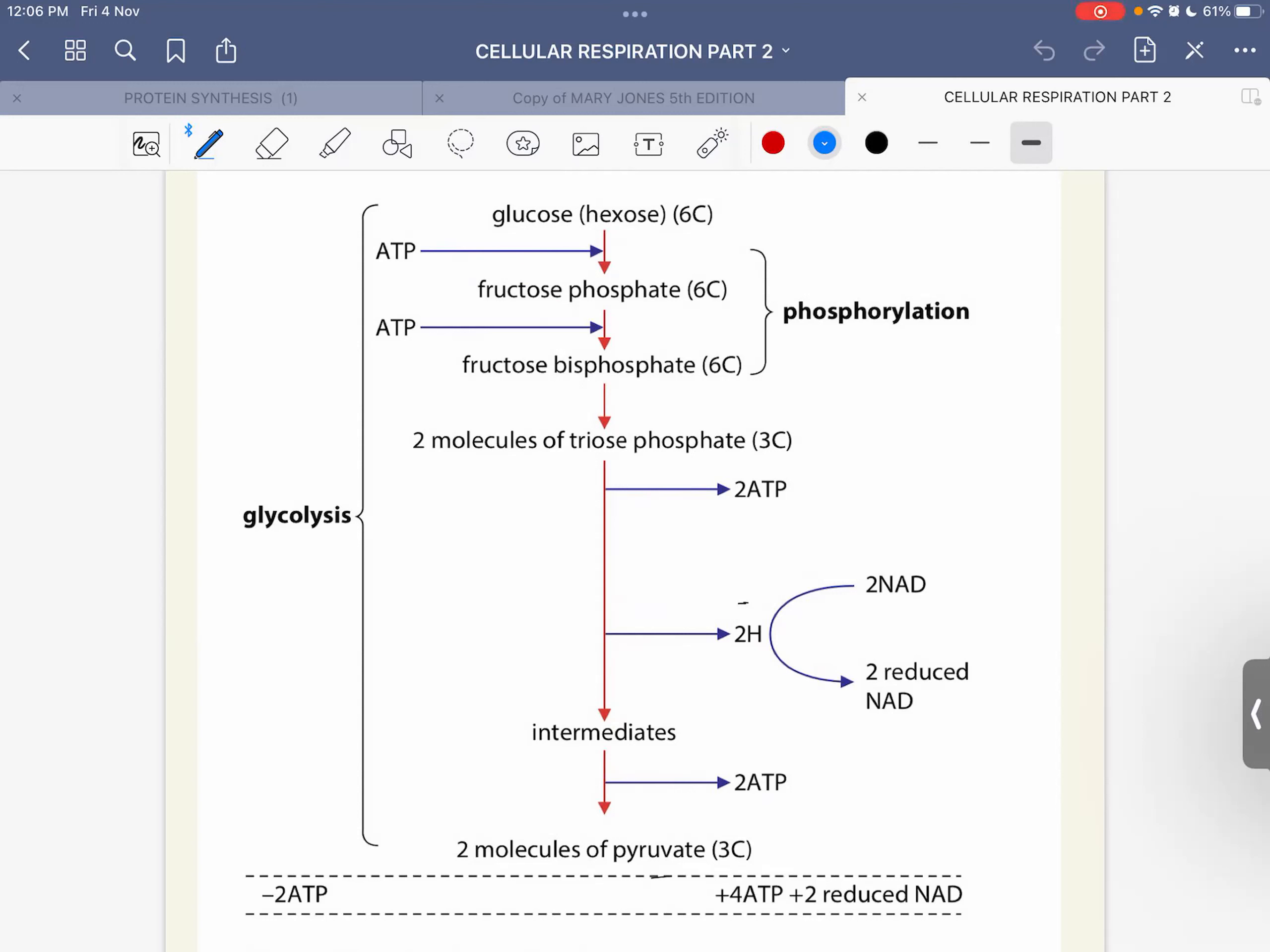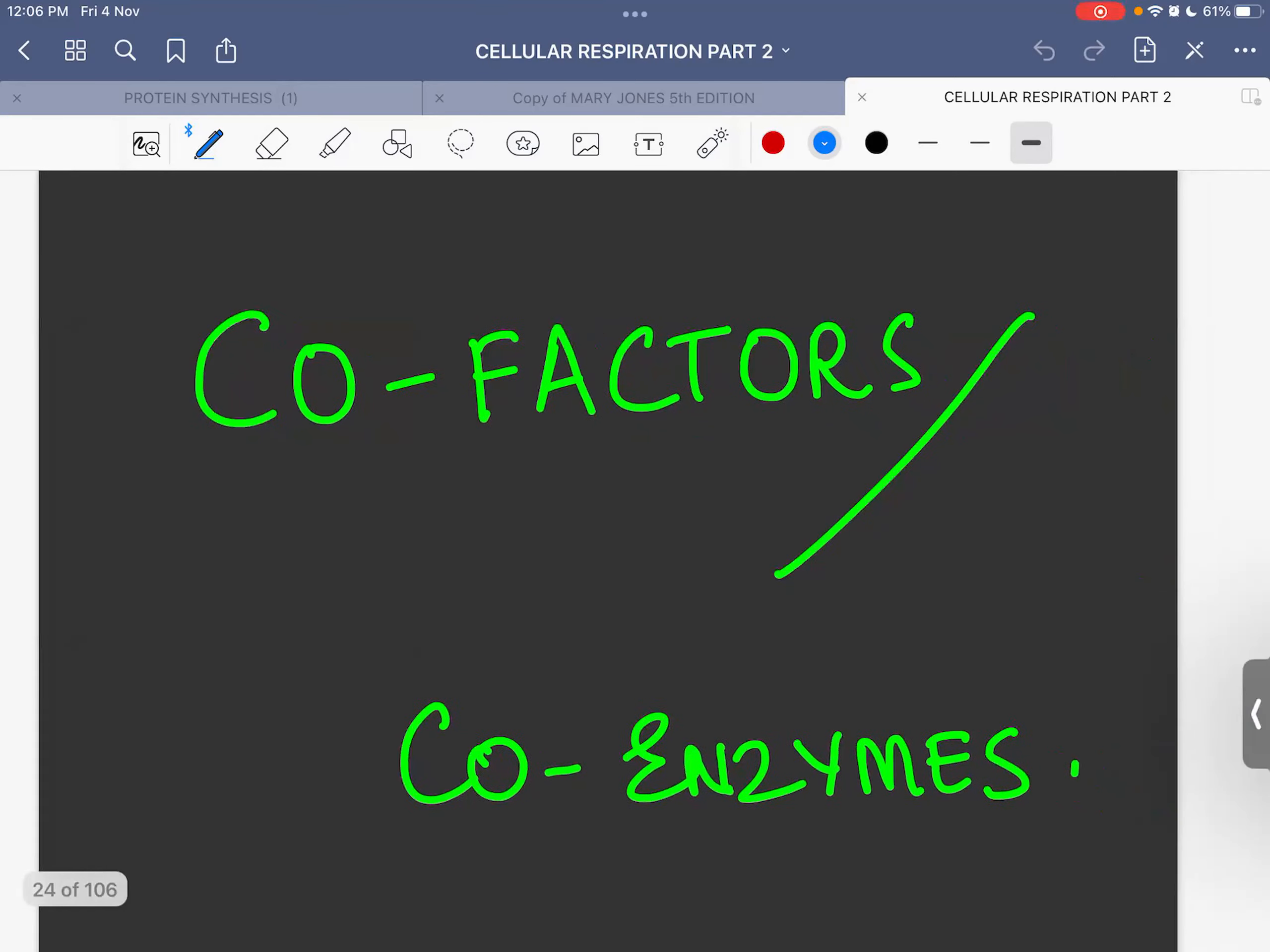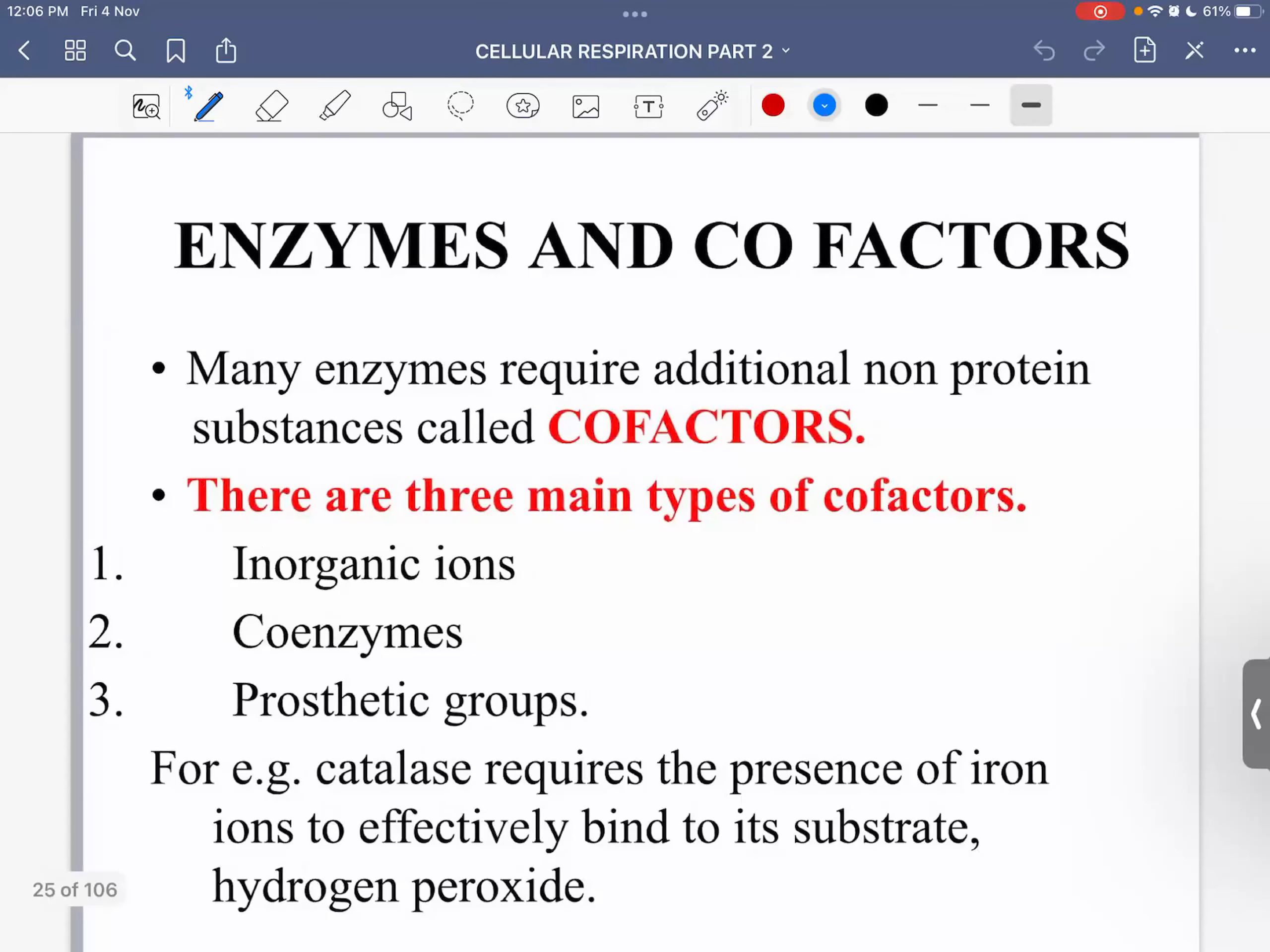After making a lot of intermediates I get two more ATP molecules and then I end up with two molecules of pyruvate. So this was the summary. Now since you were asking about what is NAD and all, we need to know a little bit about the structure of NAD and that comes under the topic of cofactors and coenzymes.